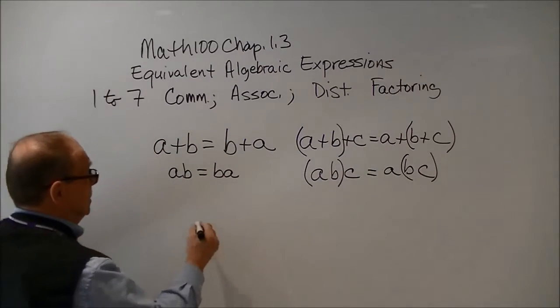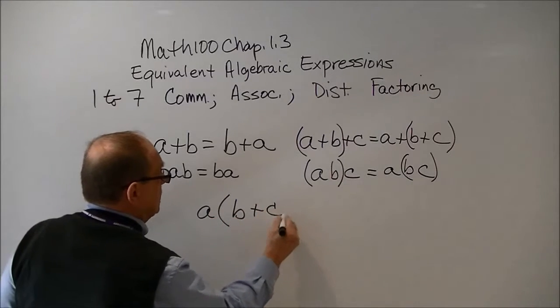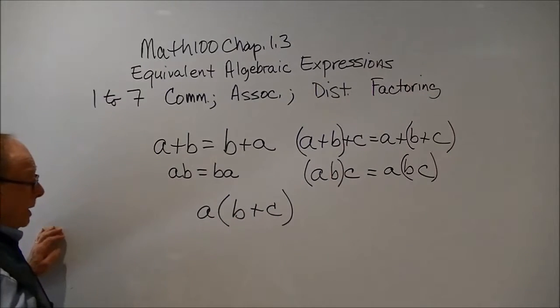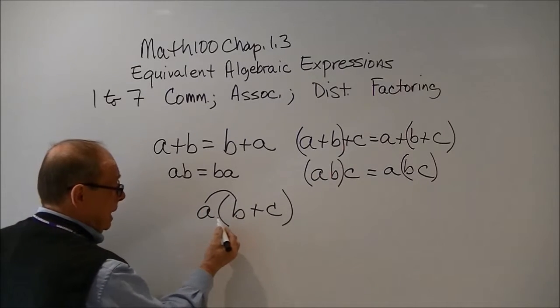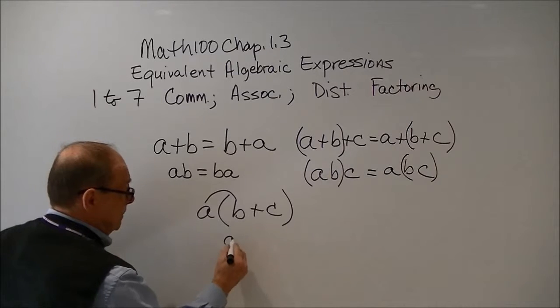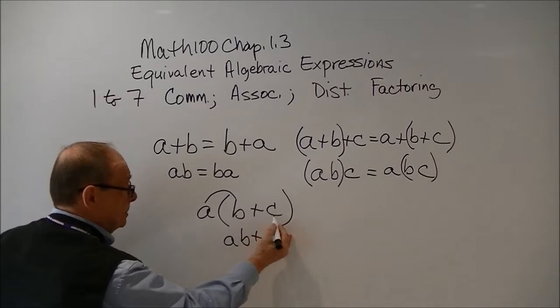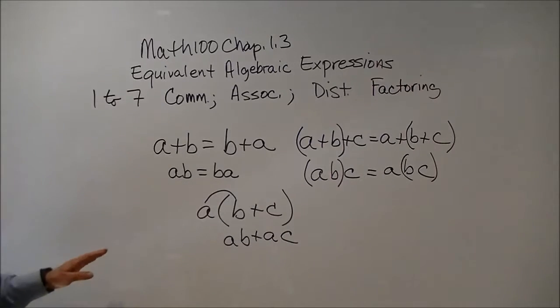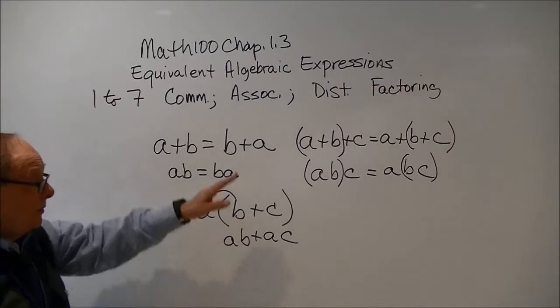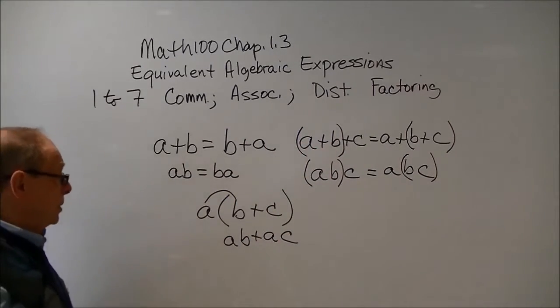And the distributive is a times b plus c. And we are distributing through multiplication: a times b is ab plus a times c is ac. So this would be an example of the distributive principle or law as they're describing it in our book.